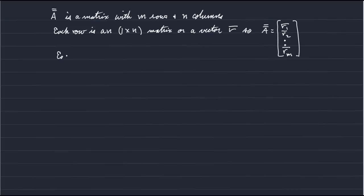Similarly, each column is an M by 1 matrix or a vector, and we'll just use C for column. We can think of matrix A as being composed of N column vectors: the first column, the second column, all the way out to the Nth column vector.